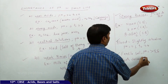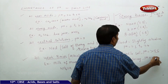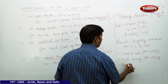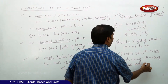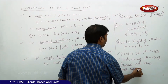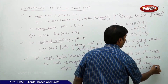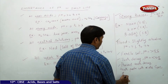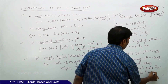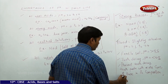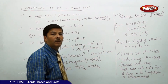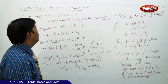Tooth decay occurs if the pH is less than 5.5. To prevent tooth decay, a toothpaste with a higher concentration of base in its composition is recommended.